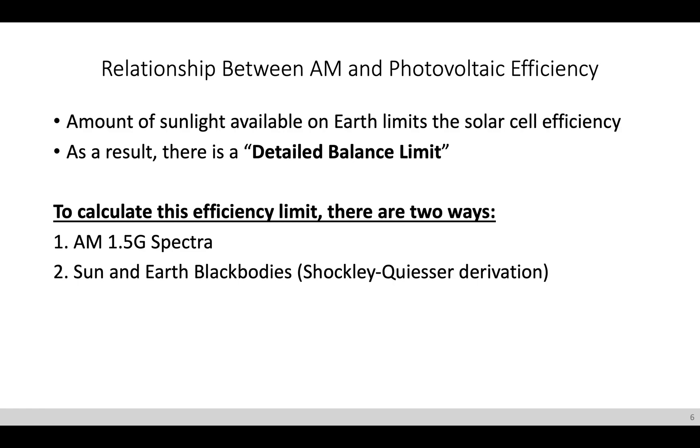The first is using the AM1.5G spectra, since this is the measured solar spectra that we test with solar cells and want to know the theoretical limit of efficiency with this spectra, since this is the available sunlight at mid-latitudes. Another method is to use the Shockley-Queisser published method, which assumes that the Sun and Earth are black bodies, and then from there derives a theoretical efficiency limit, also known as the detailed balance limit. And so in the next videos, we'll be going over and deriving the detailed balance limit with these two methods.